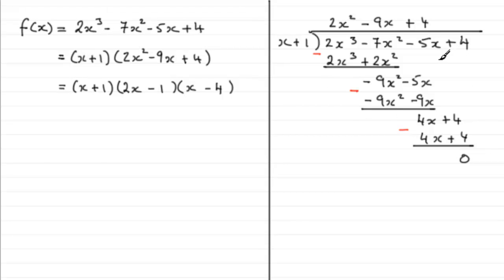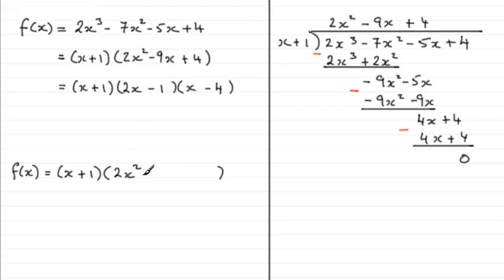Without doing this algebraic long division, we could say: f(x) equals (x+1) multiplied by some quadratic factor. What have we got to multiply the x by to give us 2x³? It's got to be 2x². What has the 1 got to multiply with to give us +4? It's got to be +4. That gives us the start of our quadratic factor and the end part. We just need to get the x term — we want to create that minus 5 for our x term.